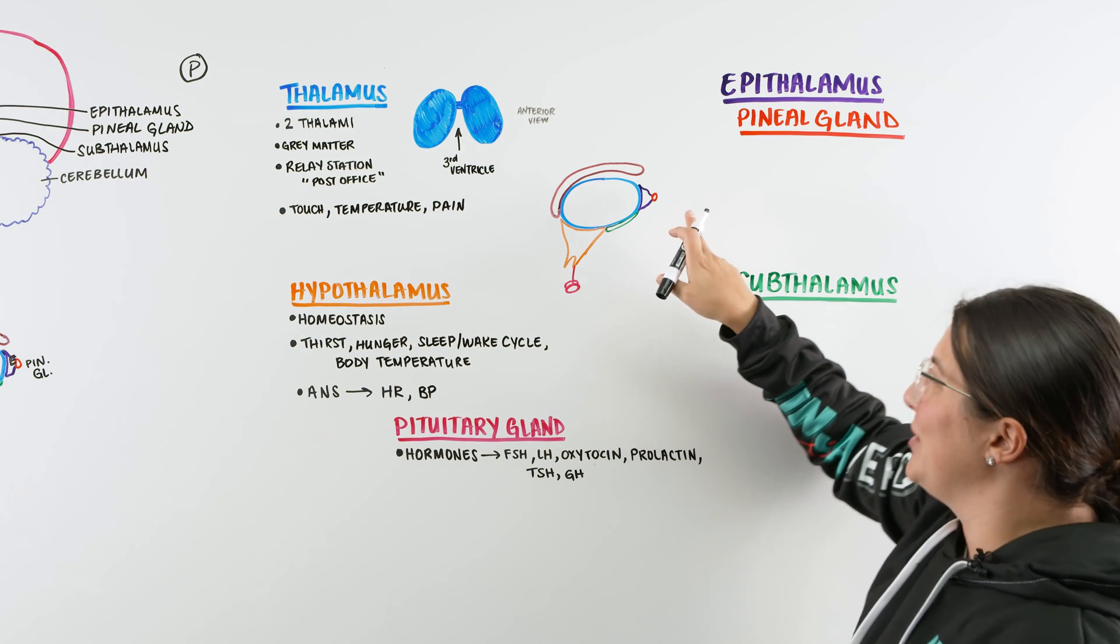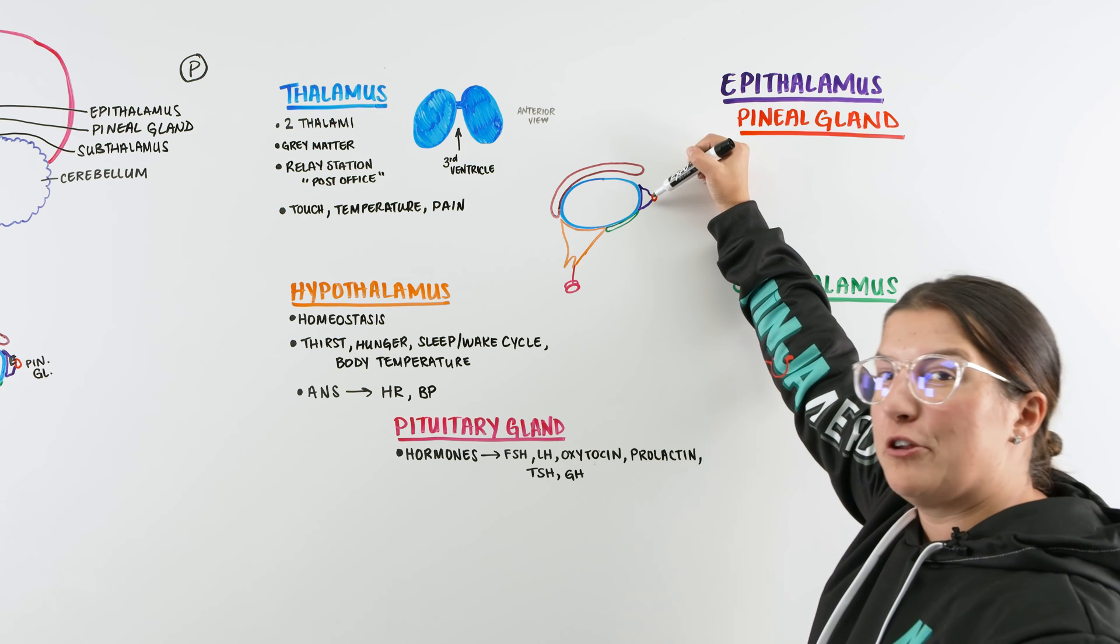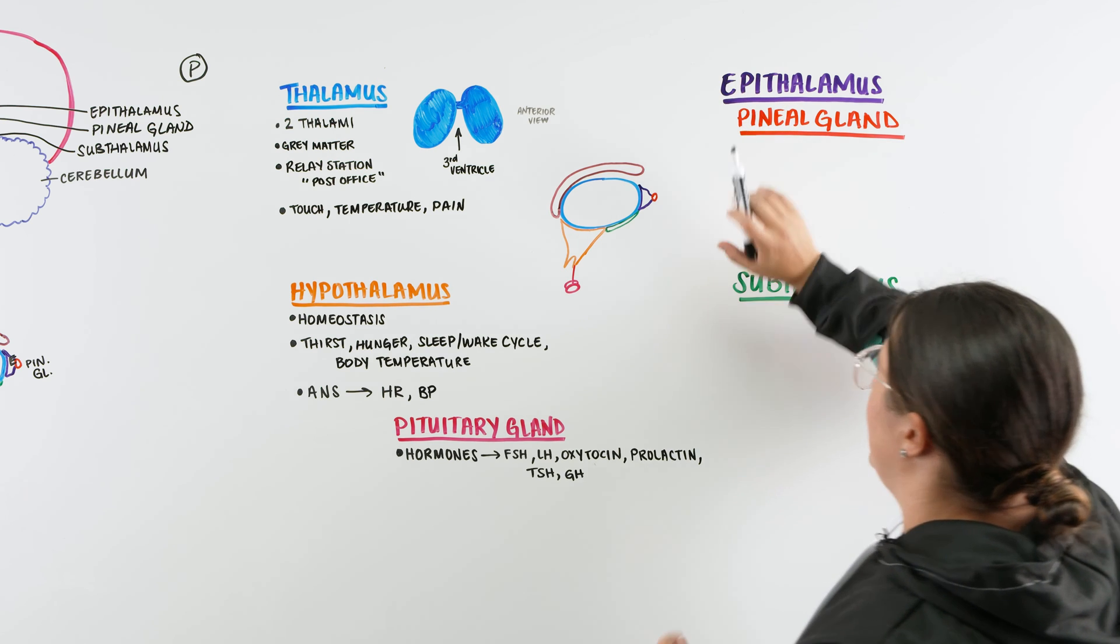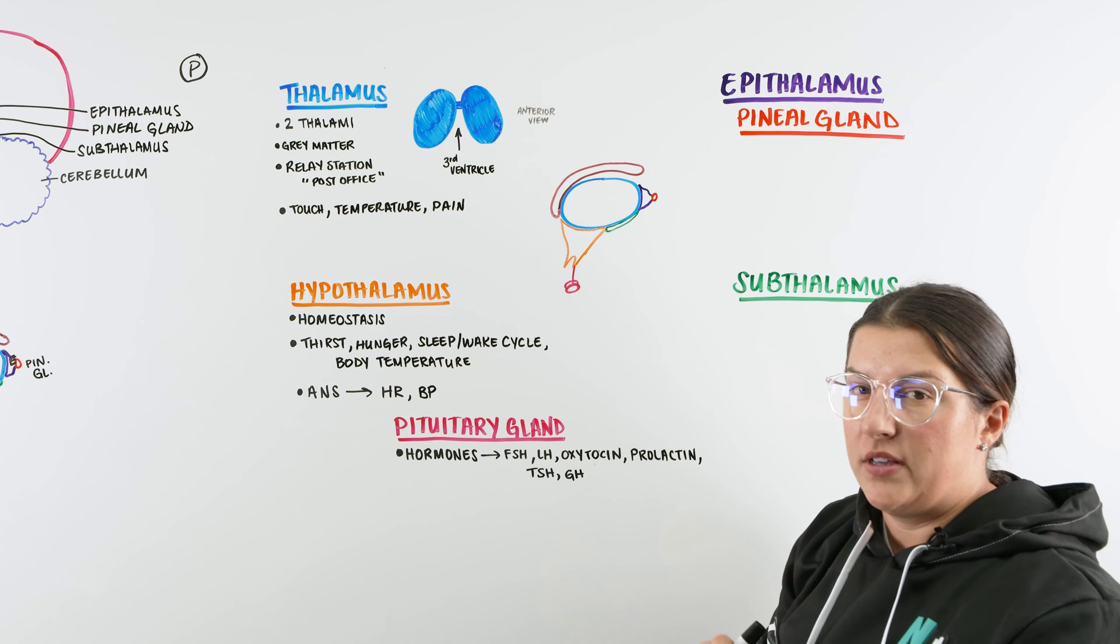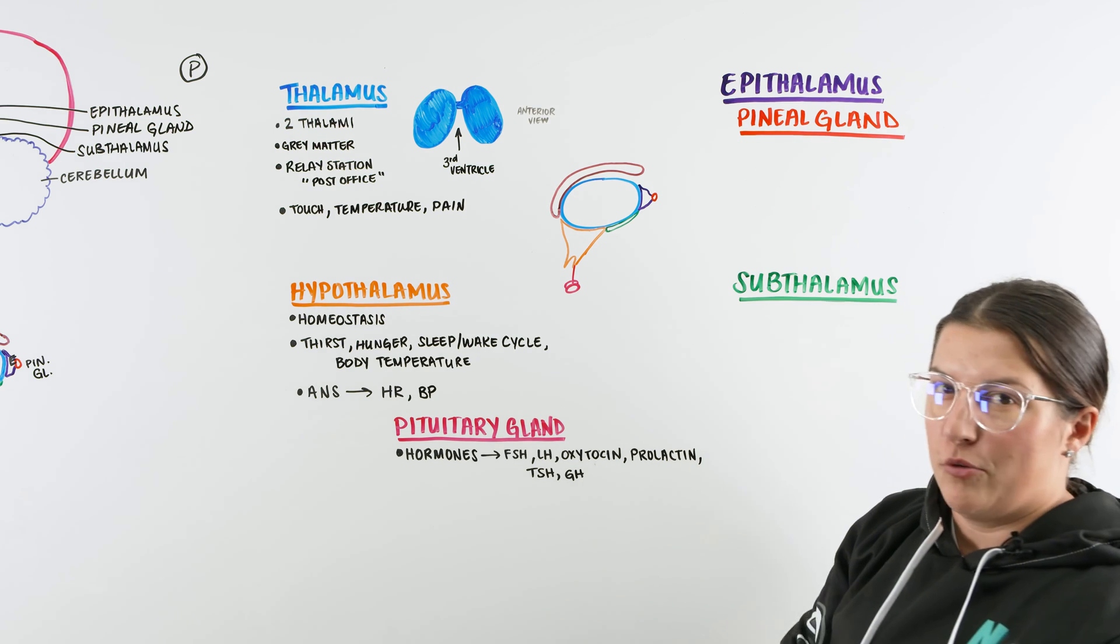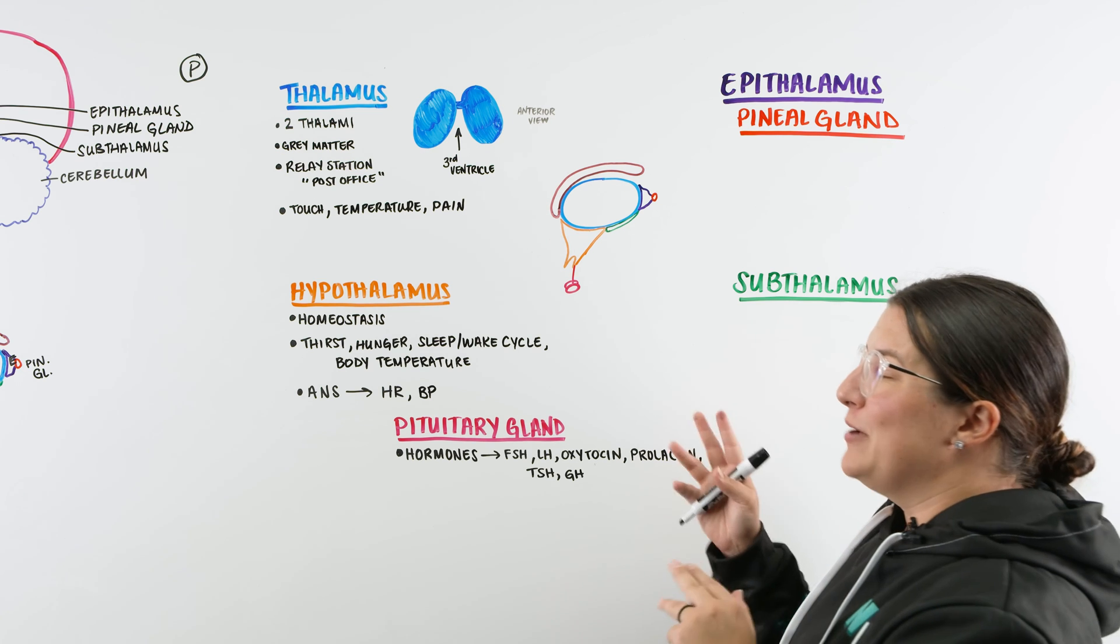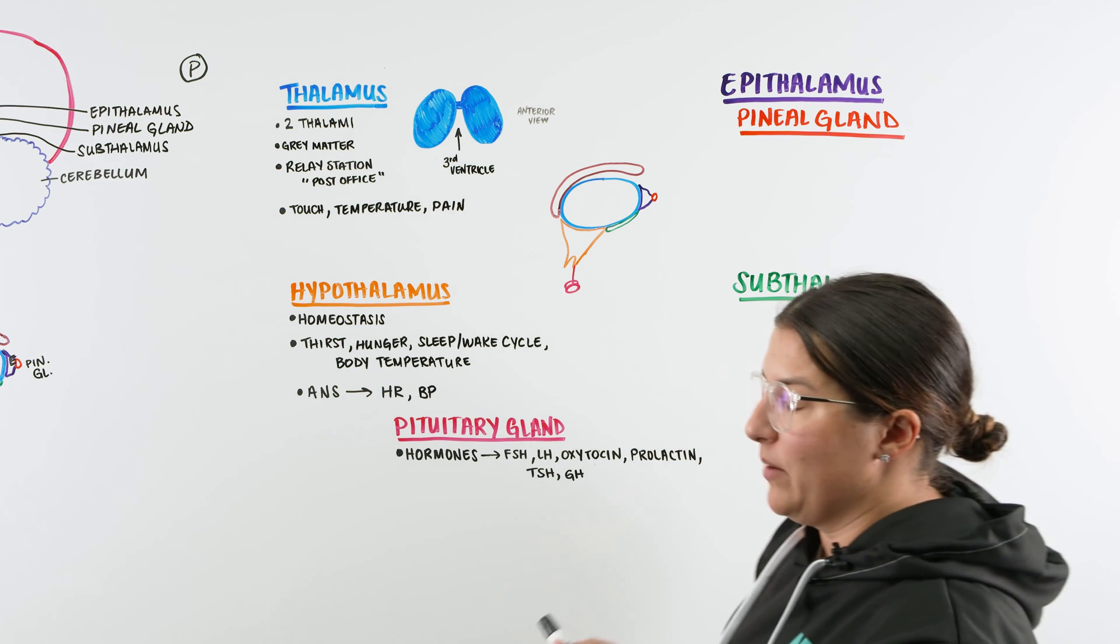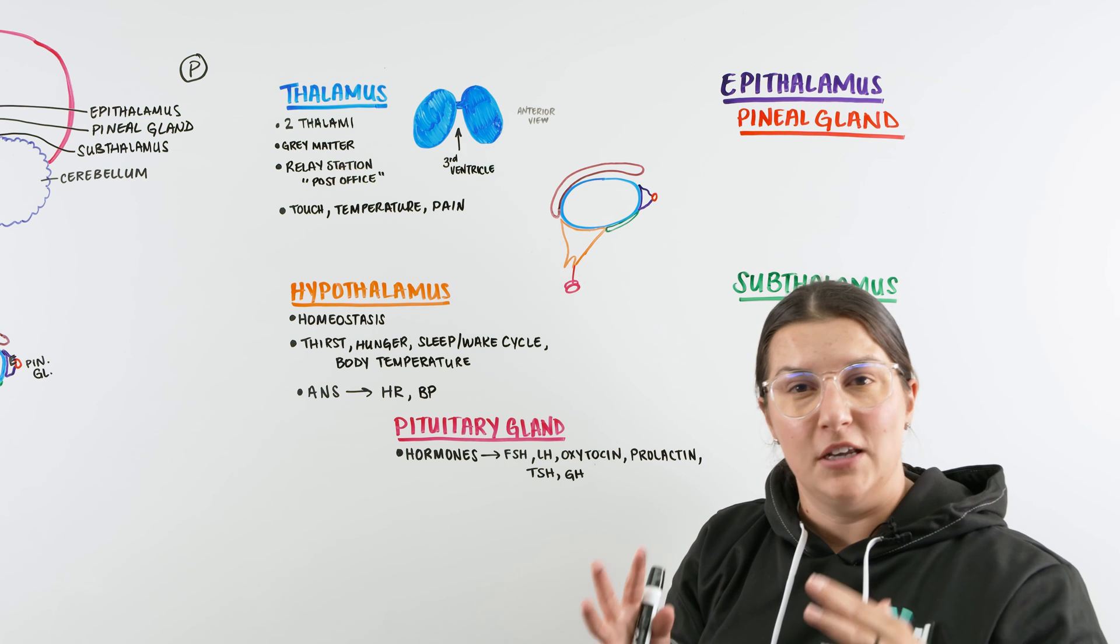So this is one of my favorite parts of the diencephalon because, like I said before, I think it looks like a hat with this little red ball on the back of it. But the epithalamus and the pineal gland are essentially an area that is really in tune with our sleep-wake cycle. And that has to do with the pineal gland. It's a gland, so more than likely going to be producing a hormone. The pineal gland produces melatonin. What is melatonin? Melatonin is a hormone that we take in or that we create in order for us to sleep.